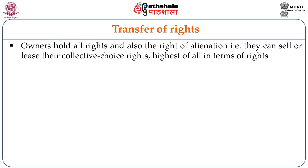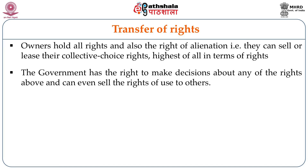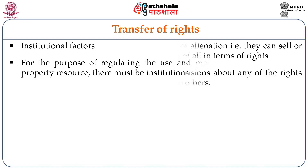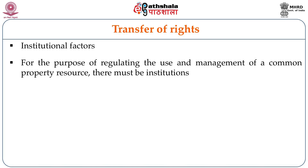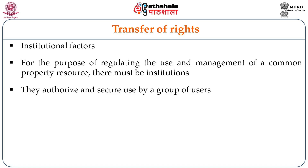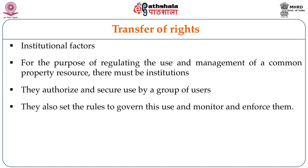Owners hold all rights and also the right of alienation — they can sell or lease the collective choice rights. This highest of rights gives a lot of responsibility to the owners. The government has the right to make decisions about any of the rights above and is an example of the ultimate owner. In reality, there are many variations and sub-categories within these five categories. For the purpose of regulating the use and management of common property resources, there must be institutions. These institutions authorize and secure use by a group of users.